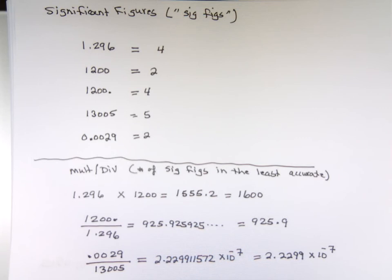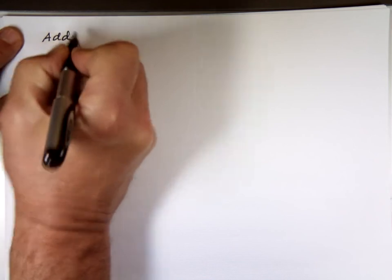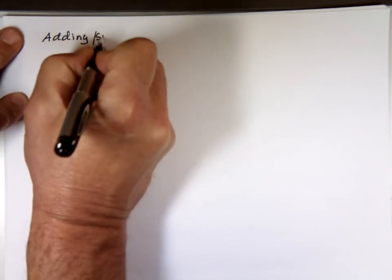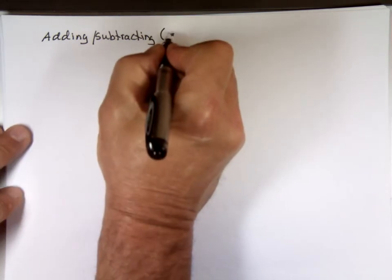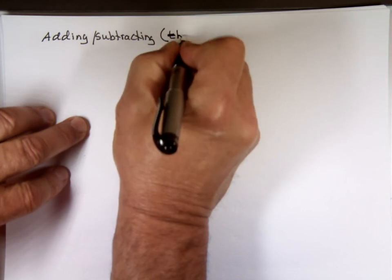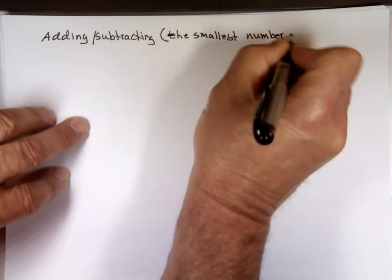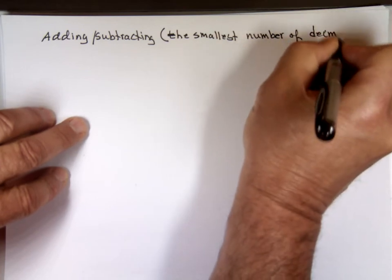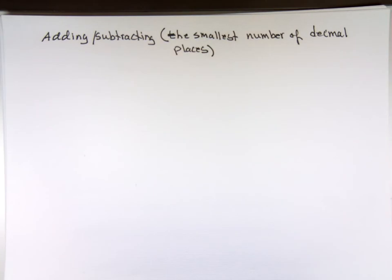Now, what about addition and subtraction? For addition and subtraction, we're going to use the smallest number of decimal places.